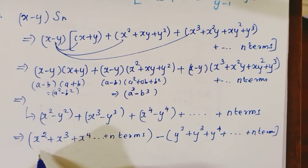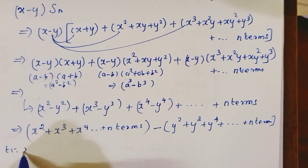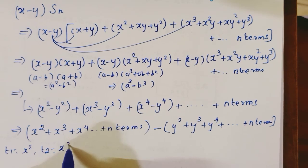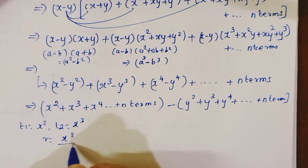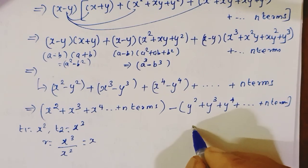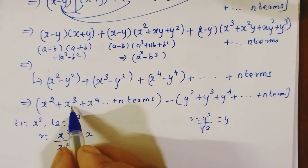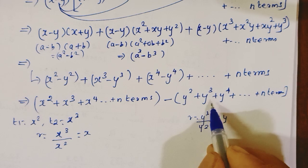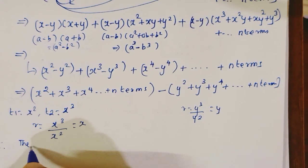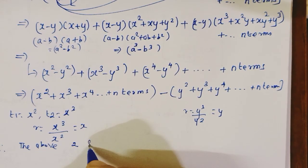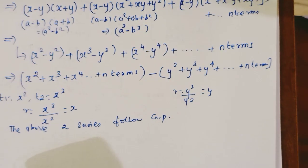Now this is GP. T1 is x², T2 is x³. Common ratio r equals T2/T1, which is x. Similarly for y, r equals y.